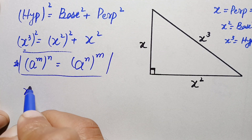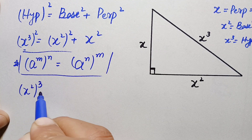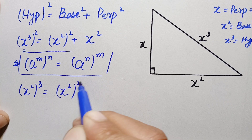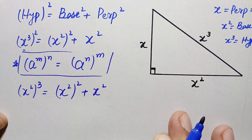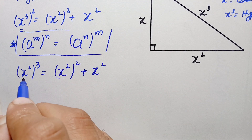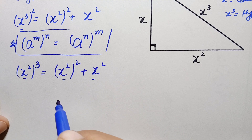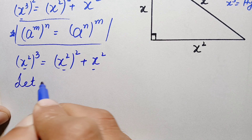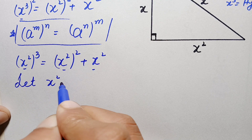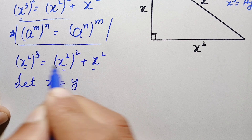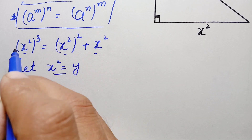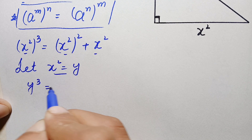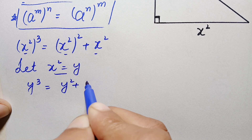The equation becomes (x²)³ = (x²)² + x². Looking at both sides of this equation, x² appears as the base throughout. So we make a substitution — let x² equal a new variable y. Substituting x² = y into the equation, it becomes: y³ = y² + y.